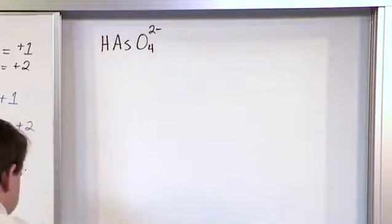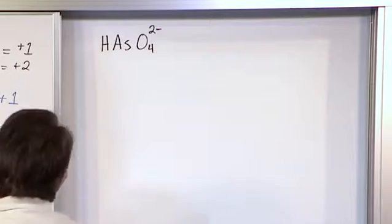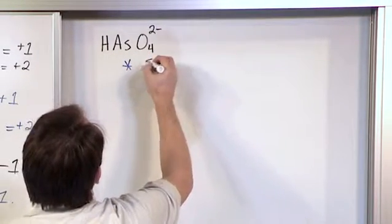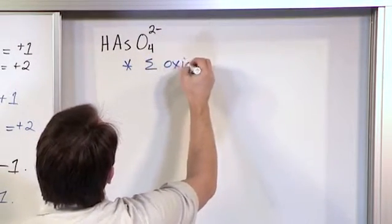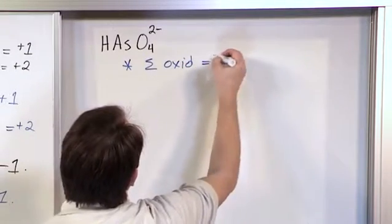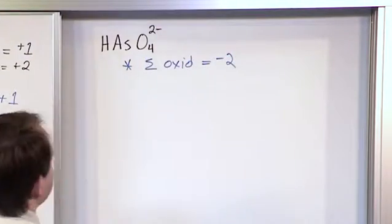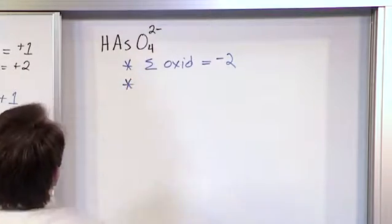So that's what we're doing right here and so then we go off and we write down rule number one, the sum of the oxidation numbers is going to be equal in this case to negative two because this ion has a charge of negative two. So that's the first thing.